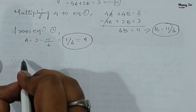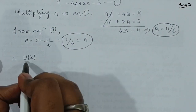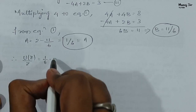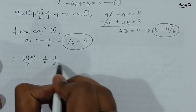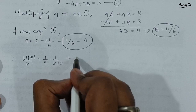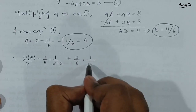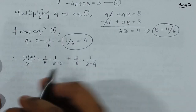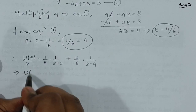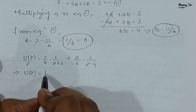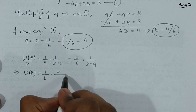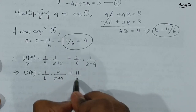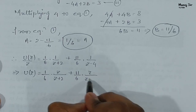Therefore, U(z)/z = (1/6) · 1/(z + 2) + (11/6) · 1/(z − 4). Taking z to the right-hand side, U(z) = (1/6) · z/(z + 2) + (11/6) · z/(z − 4).